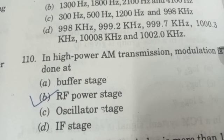In AM, if the modulation index is more than 100%, the wave gets distorted. The maximum power efficiency of an AM modulator is 50%. The probability density function of thermal noise is Gaussian. For a dipole antenna, the input impedance is independent of the location of the feed point.